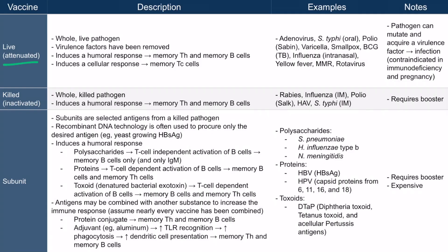Live vaccines can infect the dendritic cell, so they cause a cellular response — meaning memory cytotoxic T cells are formed. They will also form a humoral response through MHC class 2 activation of T helper cells, leading to memory T helper cells and memory B cells. So live vaccines lead to lots of immunologic memory.